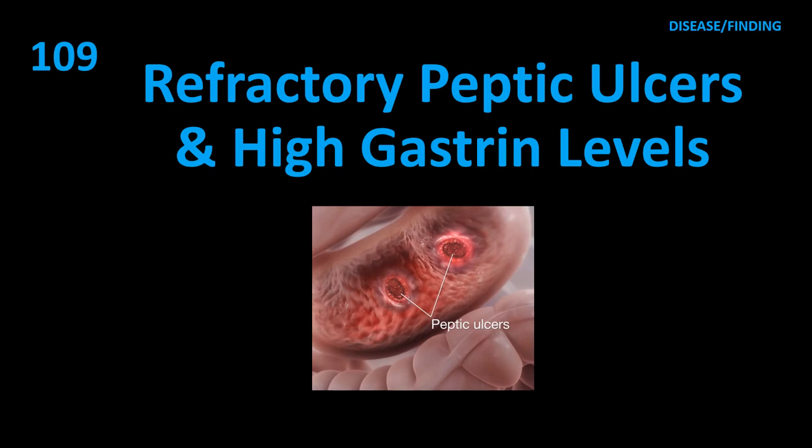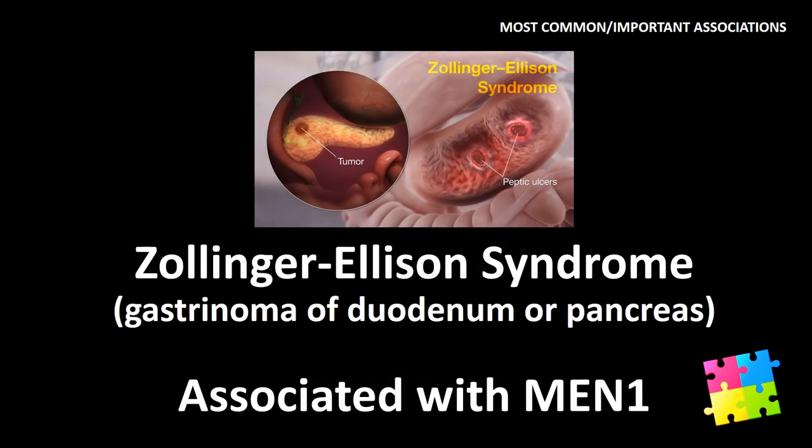Item 109: Refractory peptic ulcers and high gastrin levels — Zollinger-Ellison syndrome. Gastrinoma of the duodenum or pancreas, associated with MEN1.